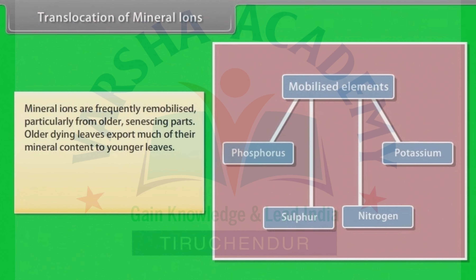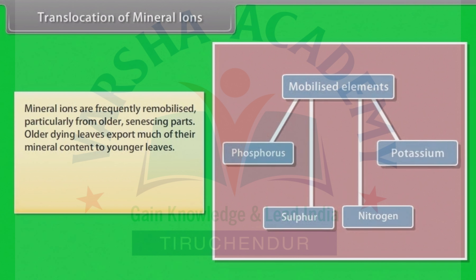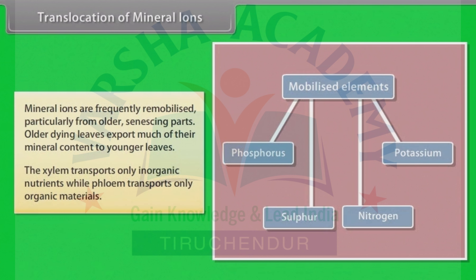Mineral ions are frequently remobilized, particularly from older, senescing parts. Older dying leaves export much of their mineral content to younger leaves. Similarly, before leaf fall in deciduous plants, minerals are removed to other parts. Elements most readily mobilized are phosphorus, sulfur, nitrogen and potassium. Some elements that are structural components, like calcium, are not remobilized. The xylem transports only inorganic nutrients, while phloem transports only organic materials.